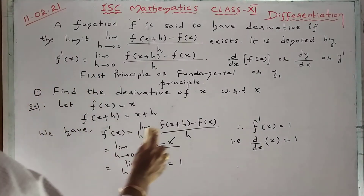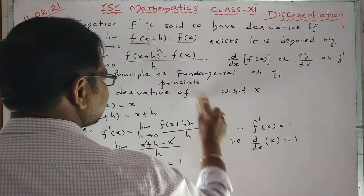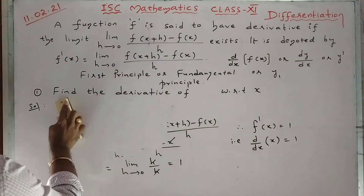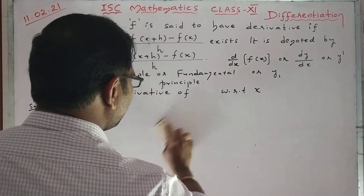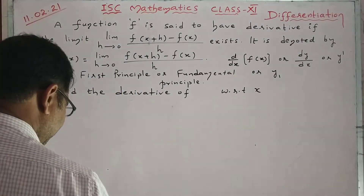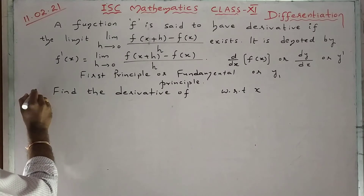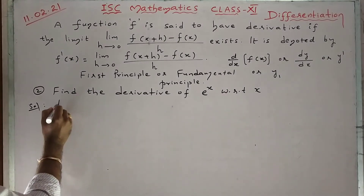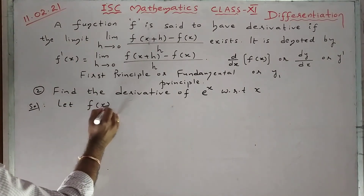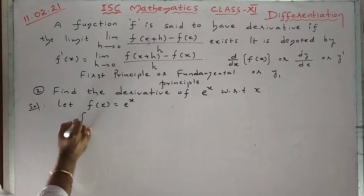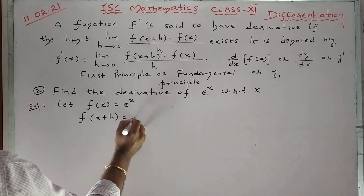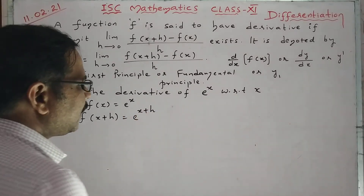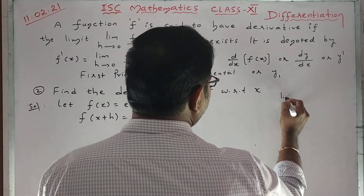Let us find the derivative of e^x with respect to x. That is the second one. Let f(x) = e^x. So f(x+h) = e^(x+h). For doing this you should remember the standard limit: limit of (e^x - 1)/x = 1.